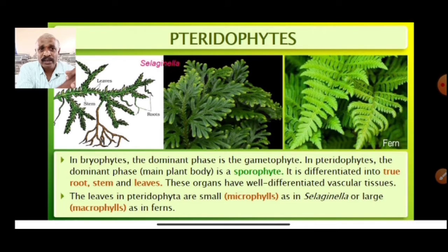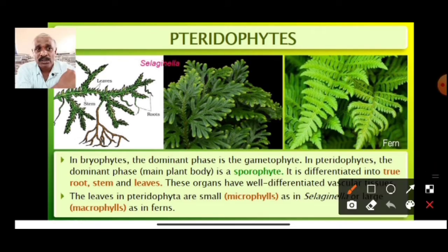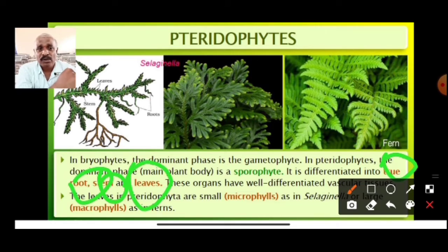But here it is exactly opposite. In pteridophytes the dominant phase — the main plant body — is a sporophyte. The gametophyte becomes the dependent one. For the first time we are observing roots, stems, and leaves very clearly — well separated — in pteridophytes, but not in bryophytes.